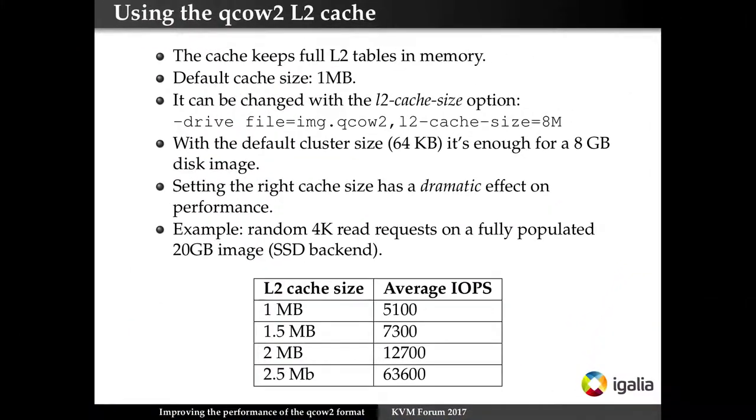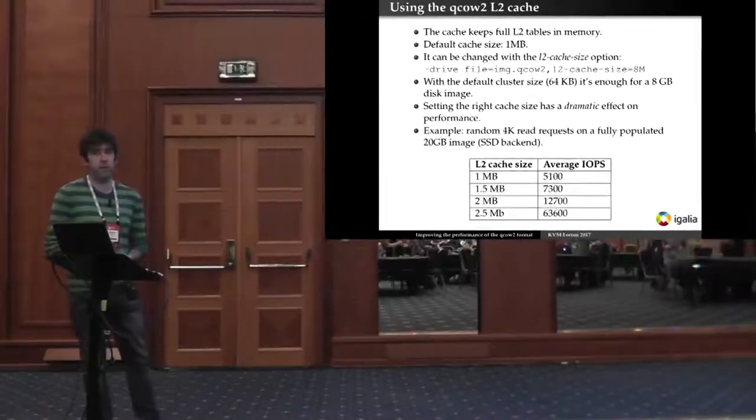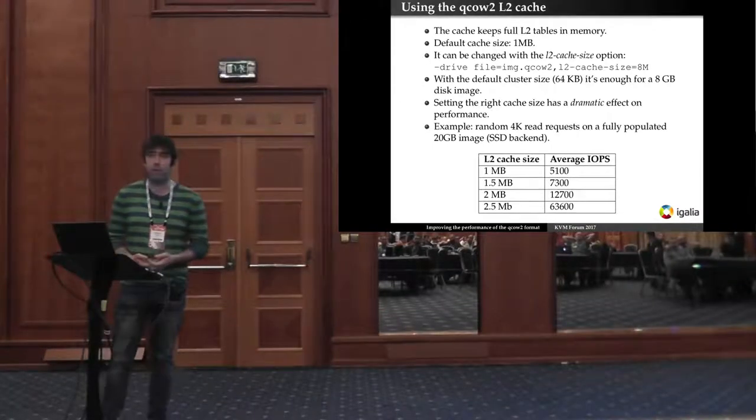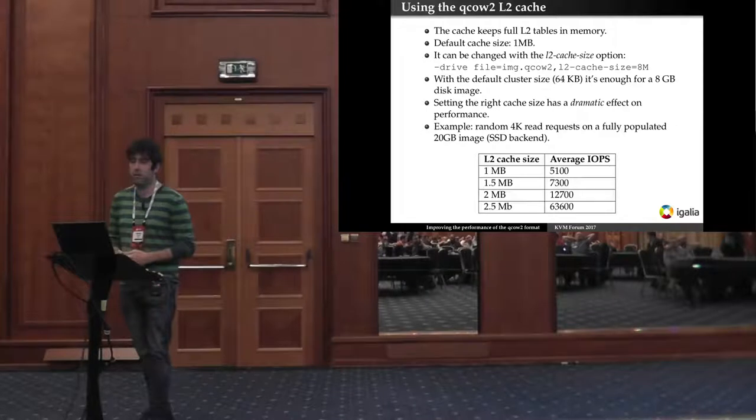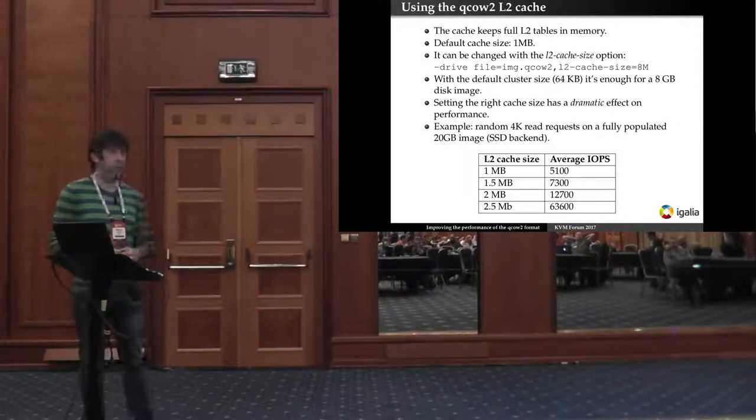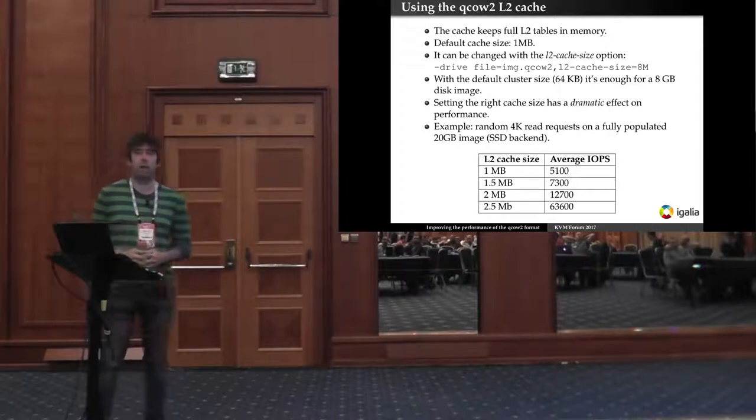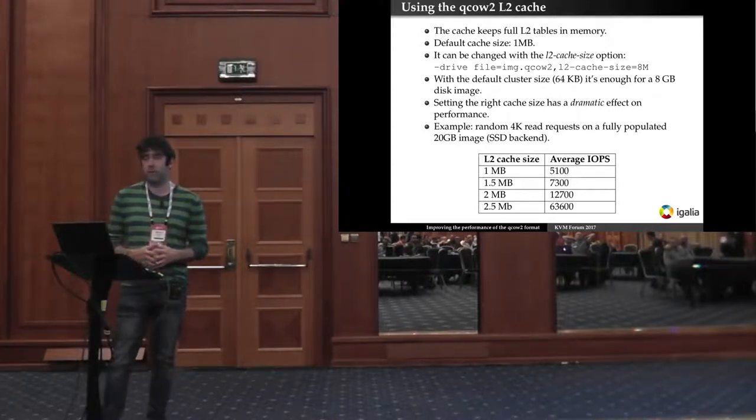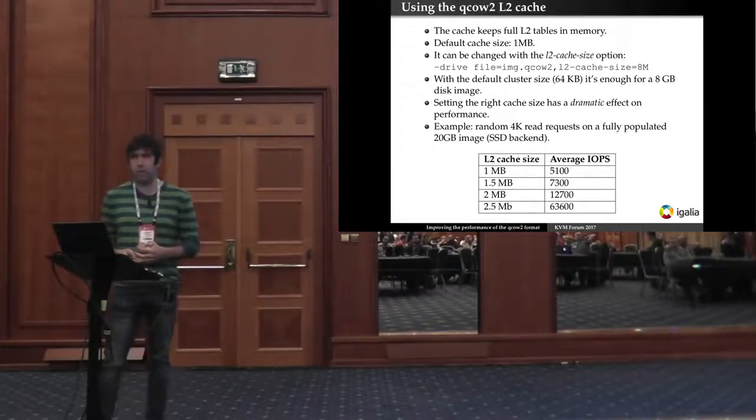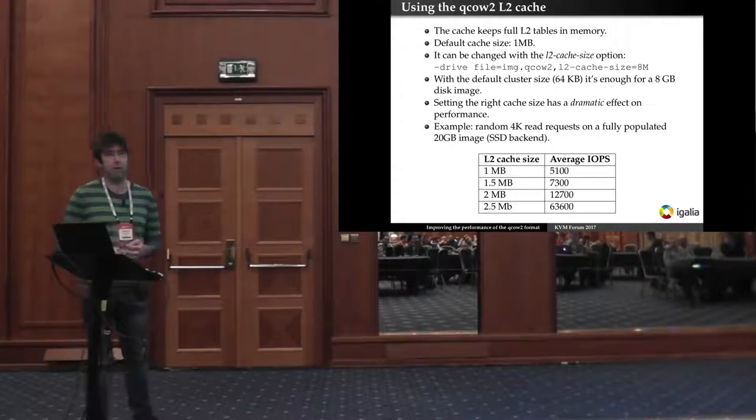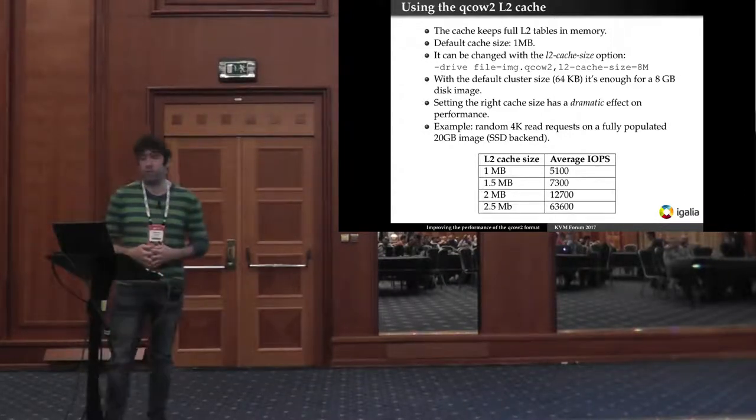So how to use the QCOW2 cache. The QCOW2 cache is enabled by default and has a size of one megabyte. It can be changed with the L2 cache size option and with the default cluster of 64 kilobytes that's enough for an 8 gigabyte disk image. So if your image is 8 gigabyte or less and you're using the default cluster then you don't need to worry about it. However if you're using a different image then you might need to take a look at that because the performance effects on performance can be dramatic.